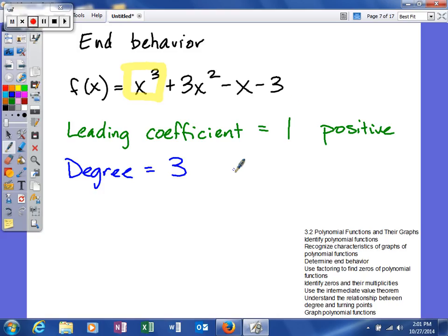What that tells us is it is going to be odd. Now that we know our leading coefficient is positive and our degree is odd, we can determine the end behavior.